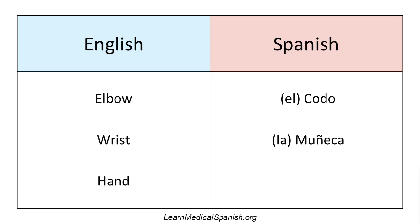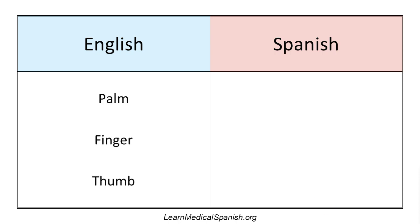Hand: la mano. La mano. Two bits of trivia: muñeca means wrist, but for some reason it's the same word as doll — it can mean wrist or doll. And the word for hand, mano, you'd probably assume it's masculine and say el mano, but nope, it's feminine — la mano. Palm, as in the palm of the hand: la palma.